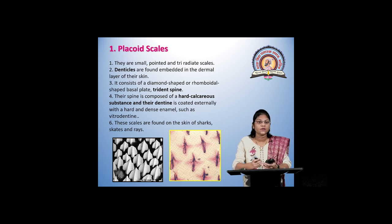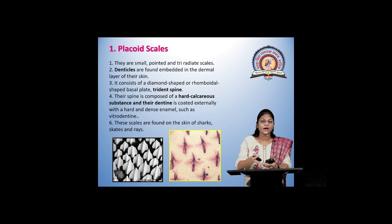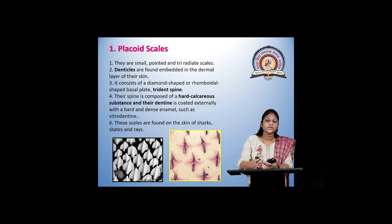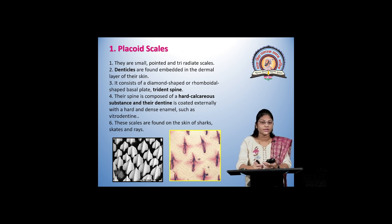Placoid scales are small and triradiate — that is, they have three rays oriented from the fish body. They are dermal in origin, attached to the dermal layer of the skin, with trident spines. They are composed of hard calcareous substances covered by a dentine-like protein. These scales are found in the skin of sharks, skates, and rays.